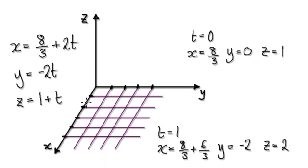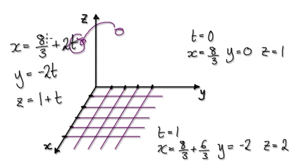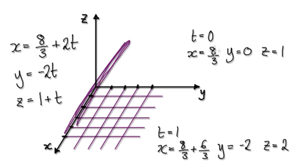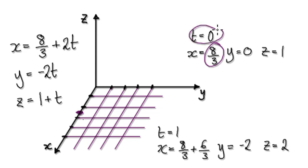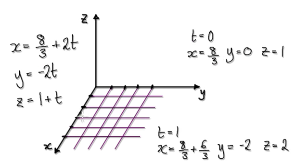So now for a straight line. Let's say you've been given this as your line. When t equals zero, this term disappears, so x will be eight over three. In the x direction, this is almost three, so it's two and a bit — it will be here. When t equals zero, y will be zero, so it must lie somewhere here. And z will be one, so it goes one up. So your starting point when t equals zero will be here.